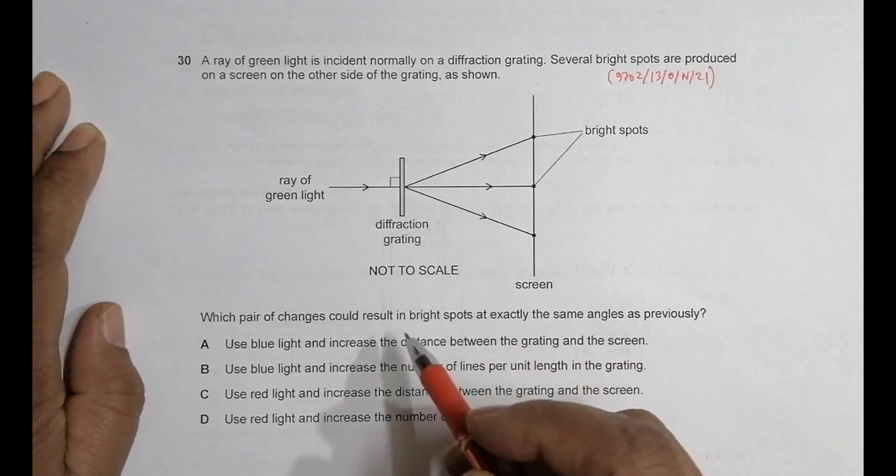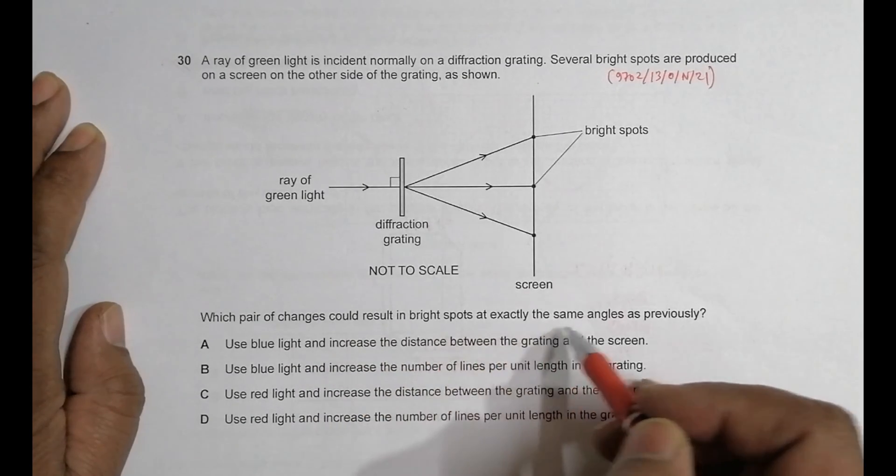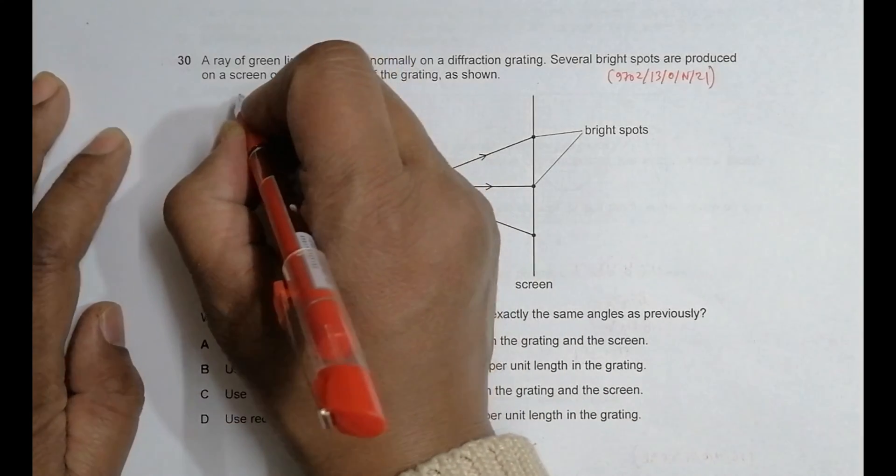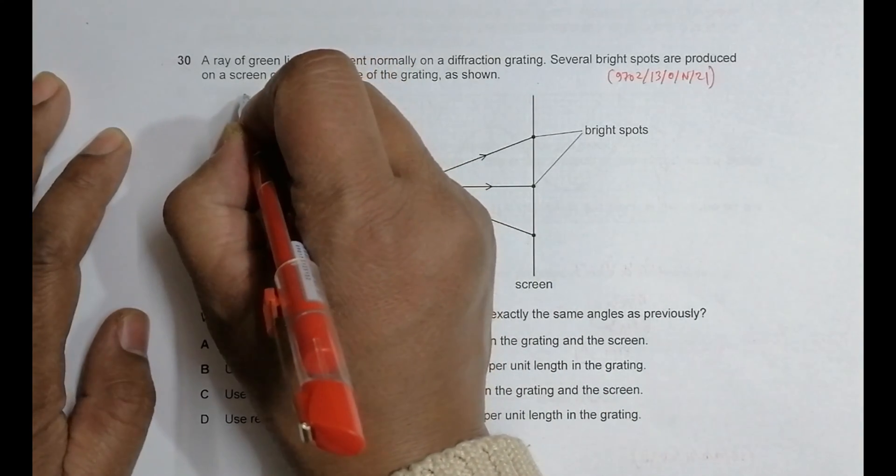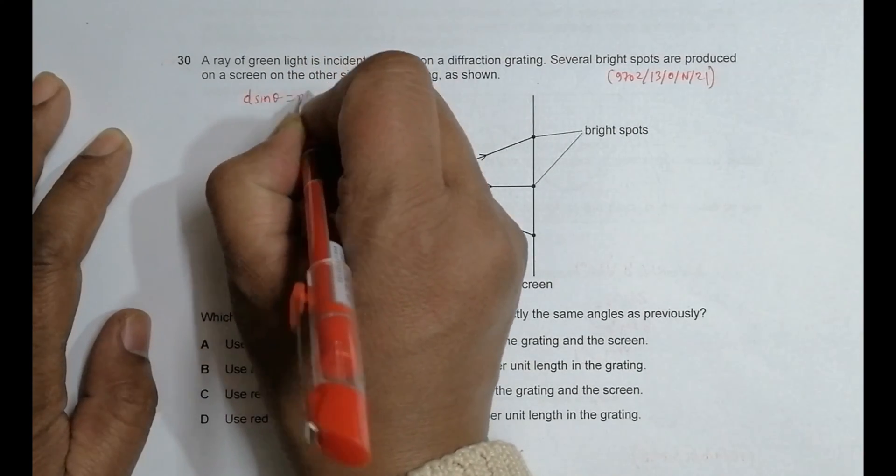Which pair of changes could result in bright spots at exactly the same angles as previously? So we have the equation here for diffraction grating. We should have at any bright spot d sine theta is equal to n into lambda.